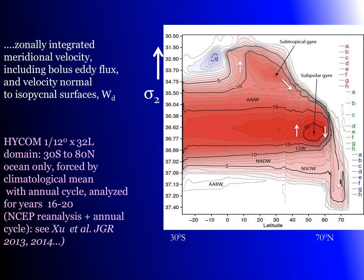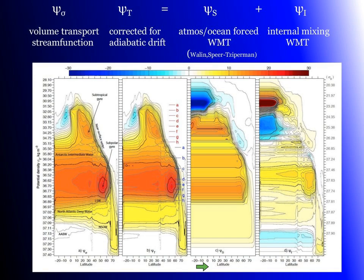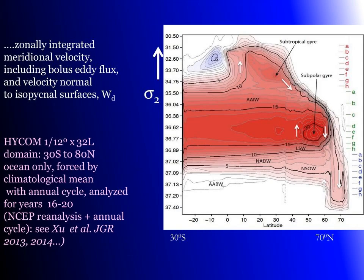This is called the subpolar gyre — but that's not the gyre, this is the overturning cell, located in subpolar and subtropical latitudes. I should say a little more about the model, which Jabot has published many papers on — all worth reading. This is a 1/12th degree model, 32 to 64 layers depending on which run, 30 south to 80 north, ocean only, forced by climatological mean winds with an annual cycle. They have also done runs of 35 or so years of interannually varying atmospheric forcing — you can see Jabot's papers in JGR. HICOM is isopycnal in the deep water and transitions to Z levels in the upper ocean.